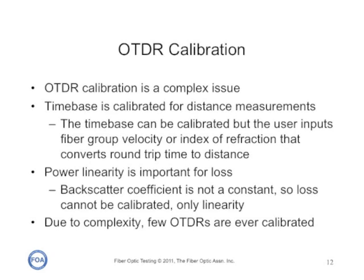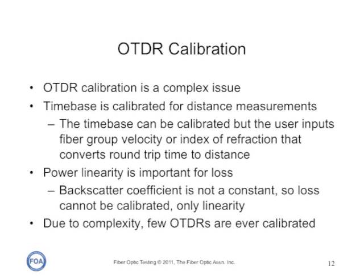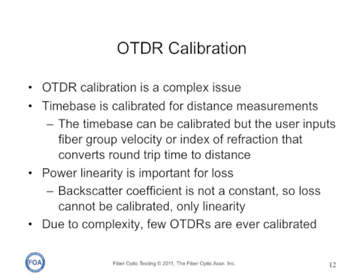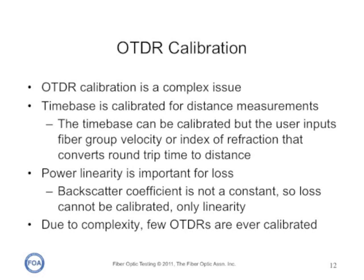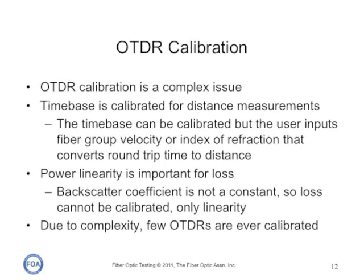We often get questions about OTDR calibration. OTDR calibration is a complex issue. The time base is calibrated for distance measurements, but the actual distance measurement is going to be influenced by the fiber NVP or index of refraction, so it's not a big issue. The power linearity is important for measuring loss, but the backscatter coefficient is not a constant, so loss cannot really be calibrated — only linearity. Due to the complexity of calibrating OTDRs, very few are ever calibrated, and we actually don't know any labs that do it routinely.